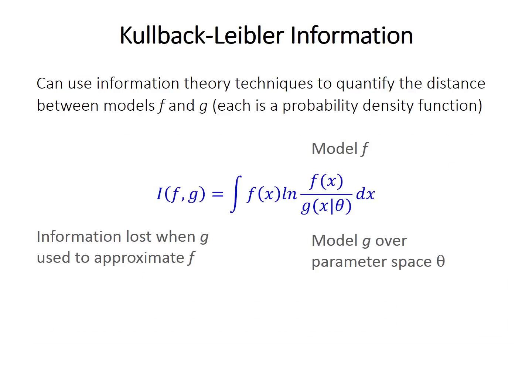Okay, so there's something in information theory called the Kulback-Leibler information. And it basically just quantifies the amount of information lost when some probability density function, which we'll call G, is used to approximate model F, and F is also some probability distribution function. So this is the equation that they give for this. Model G is evaluated over some parameter space theta, and then the function is integrated for continuous distributions at least over x. So just the details of this integral function aren't critical because it actually isn't going to be used.